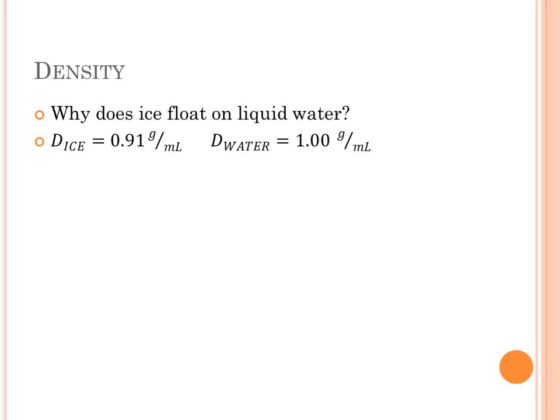Density of ice is 0.91 grams per milliliter. Density of water is about 1 gram per milliliter. We find that when water freezes, it expands just a little bit. And that increased volume with the same mass results in a slightly lower density, which is actually atypical.